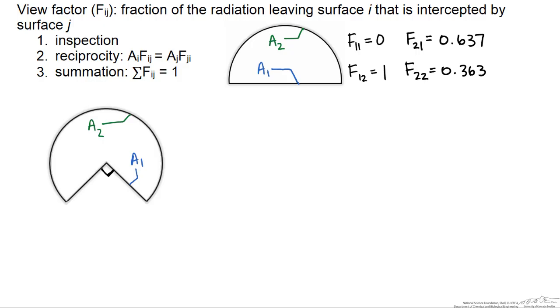Here we have a duct with a triangular groove in it. We'll call the area here of the groove, all the way down the length of the pipe, area one. This is also going to be the radius of the circle.